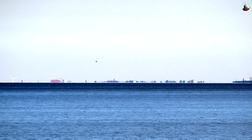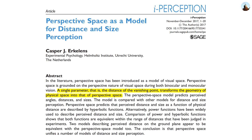Rather than treating the limits of vision as a problem, we need to understand that it is this very phenomenon which provides our true perspective view. The world would look very alien if we saw it through linear or Euclidean eyes. In a paper by Casper J. Erklins, it states: 'A single parameter — the distance of the vanishing point — transforms the geometry of physical space into that of perspective space.' In summary, it is the reality of objects vanishing due to our limited vision that brings about true perspective. As such, Euclidean geometry should not be assumed as valid in any calculations.